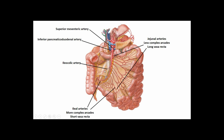We have an ileocolic artery traveling at about a seven or eight o'clock direction on a clock face, heading toward the cecum, giving off anterior and posterior cecal branches. It supplies the proximal ascending colon, distal ileum, and typically gives rise to the appendicular artery to the vermiform appendix. At about nine o'clock we have the right colic artery to the ascending colon, and at noon the middle colic artery to the transverse colon.